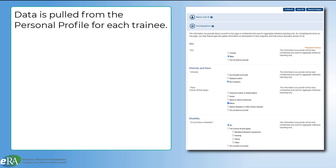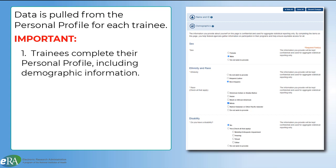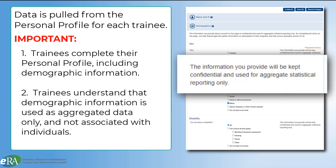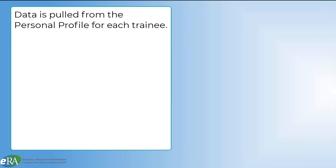Because data is being pulled from the personal profile of each trainee, it is very important that trainees: first, fill in their personal profile as completely as possible, paying close attention to the demographic portion of the profile; and second, understand that while demographic information is collected at an individual level, it is reported as aggregate data and is not associated to them as an individual.